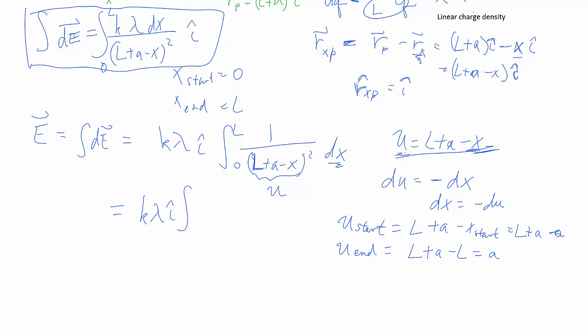So our u end is just a, and we have L plus a. 1 over now is u squared, and then it becomes negative du. We can rewrite one more time just to make it even more obvious how to integrate this. We'll take the negative out, and we'll write this as a negative power. And we simply have a power, we just use the power rule, and we can take this integral.